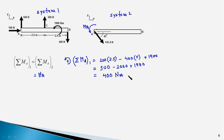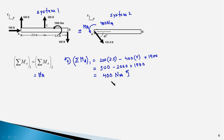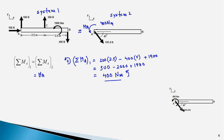The couple M_A is 400 Newton-meter in the anti-clockwise direction. These two systems are equivalent — they have the same effect on beam AB. The final result is a force of 141.4 Newton making an angle of 45 degrees with the X axis, and a couple of 400 Newton-meter in the anti-clockwise direction, as shown in the diagram.